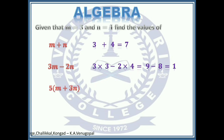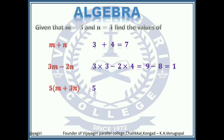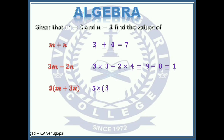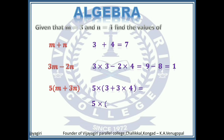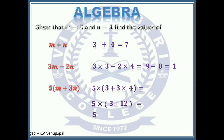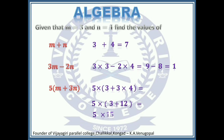Let's see another example: 5 times (M plus 3N). Brackets are present, so take 5, then inside the bracket the value of M is 3, plus 3N which is 3 times 4. When simplifying, we first do what is inside the bracket — multiplication first: 3 plus 12 equals 15. So it becomes 5 times 15, and the answer is 75.